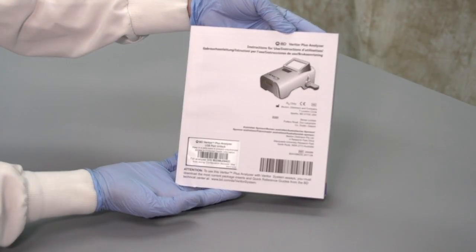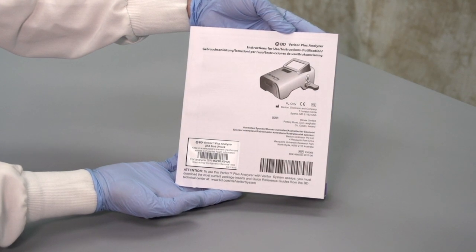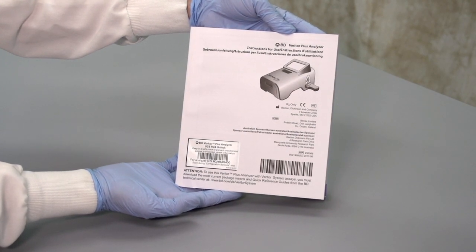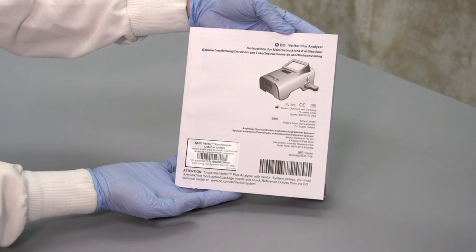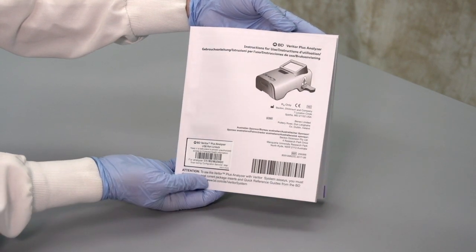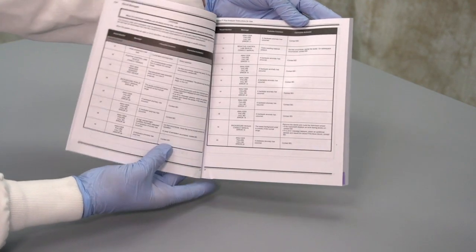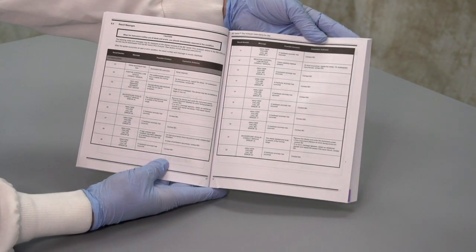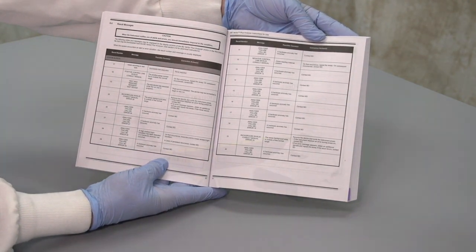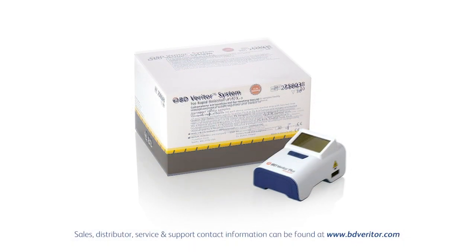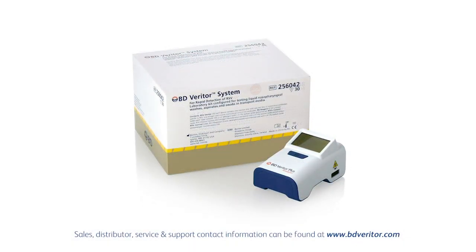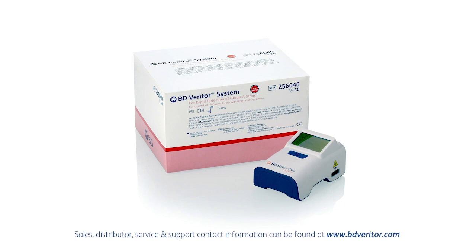The BD Veritor Plus analyzer is easy to maintain and troubleshoot. Note, it comes with an instrument lifetime warranty, 3,500 tests, or two years usage, whichever comes first, and is supported by BD Global Technical Service and Support. Please refer to the Instructions for Use booklet for additional information or troubleshooting guidance.